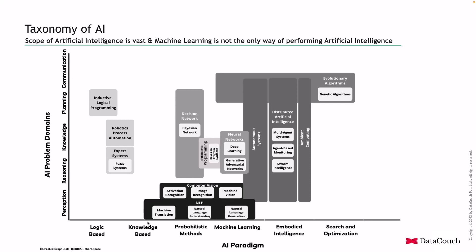Looking at natural language processing, it has many algorithms that follow different approaches — such as knowledge-based, probabilistic methods, or machine learning — to solve communication and perception-related problems. Similarly, logic-based and knowledge-based AI paradigms cover reasoning, knowledge, and planning-related AI domains.